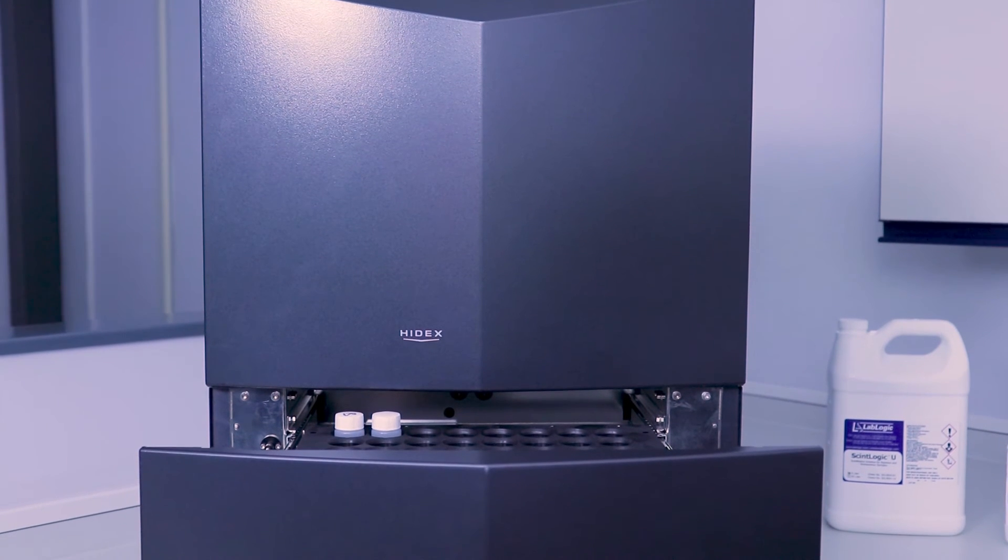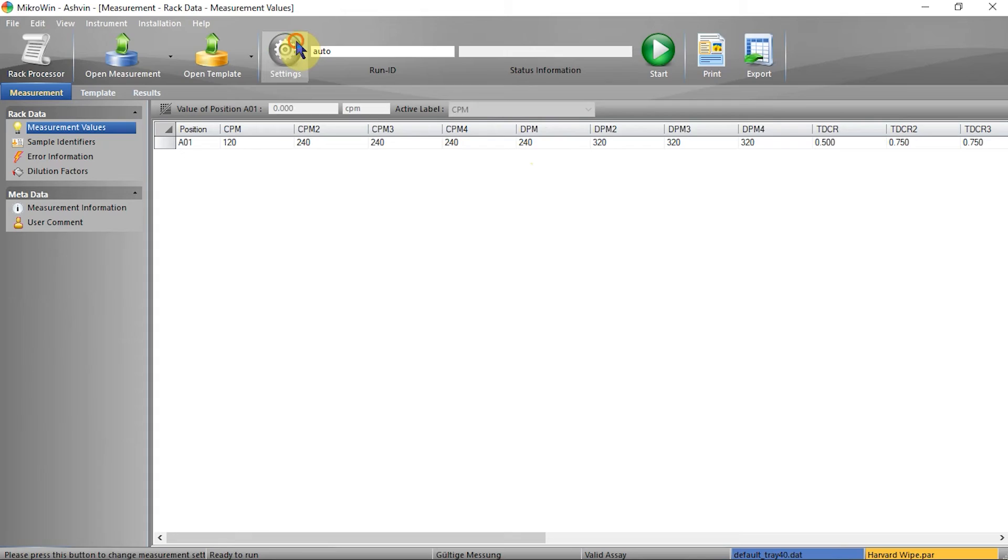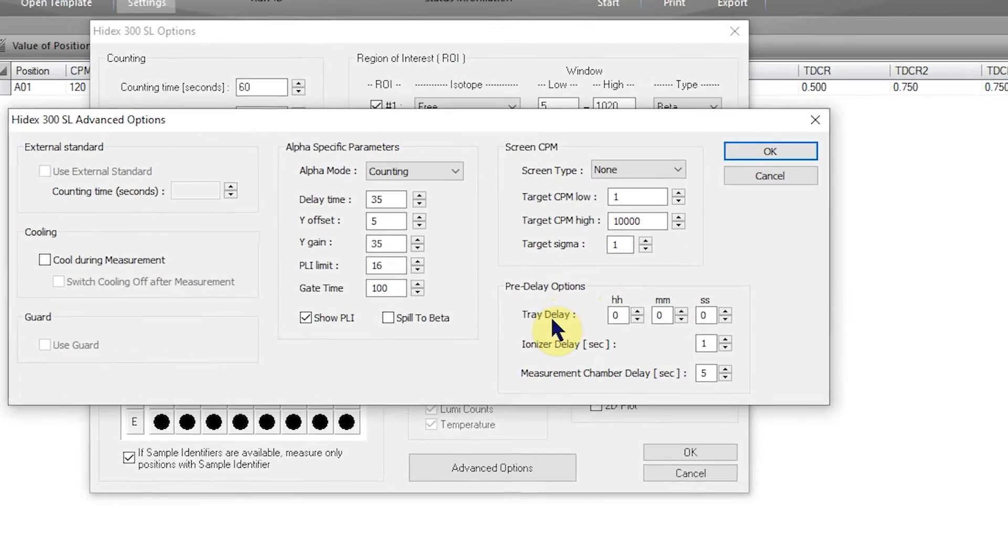You can also place in a drawer for dark adaptation to remove luminescence, or in the Micro Win software you can set a delay to dark adapt.